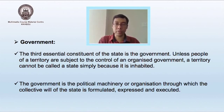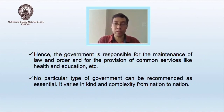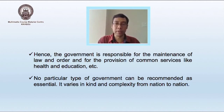The third essential constituent element of the state is the government. Unless people of a territory are subject to the control of an organized government, a territory cannot be called a state simply because it is inhabited. The government is the political machinery through which the collective will of the state is formulated, expressed, and executed. The government is responsible for the maintenance of law and order and for the provision of common services like health and education. No particular type of government can be recommended as essential; it varies in kind and complexity from nation to nation.